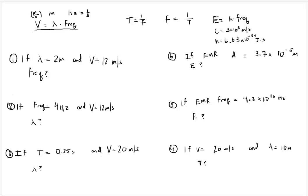In this video we're going to run through a bunch of different wave calculations. We're going to start from the basic equation: velocity is wavelength times frequency. All you have to do is multiply wavelength times frequency to get your velocity. We'll show the different versions of that.